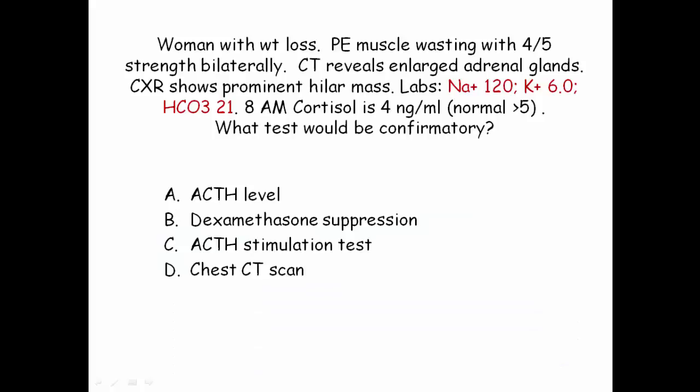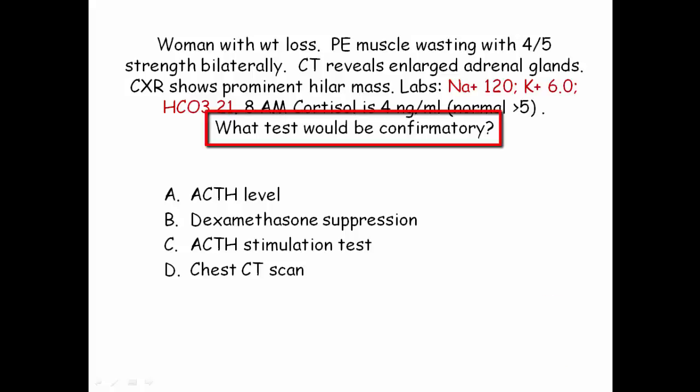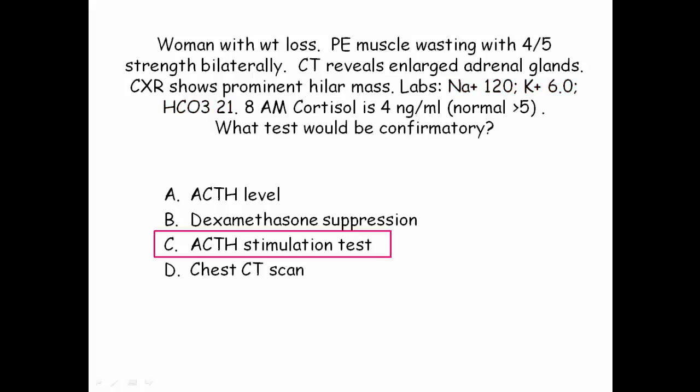The final question demonstrates the approach that data trumps verbiage. The combination of hyponatremia, hyperkalemia, and metabolic acidosis with low bicarb is consistent with primary adrenal failure, along with a low cortisol. The confirmatory test is an ACTH stimulation test — in primary adrenal failure, there will be no rise in the cortisol value. Enlarged adrenal glands in the setting of a chest mass would suggest metastatic lung cancer as an infiltrative cause, rather than Addison's disease.